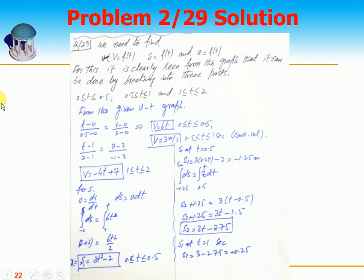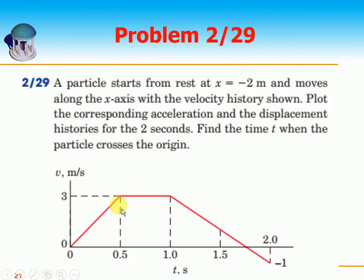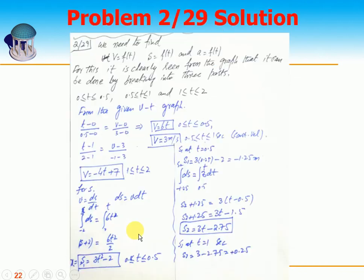We need to find velocity as a function of time, displacement as a function of time, and acceleration as a function of time. For the straight-line segments, we use the two-point form: (v minus v1)/(v2 minus v1) equals (t minus t1)/(t2 minus t1). For the first part, one point is (t=0, v=0) and the other is (t=0.5, v=3). This gives the velocity-time relationship for 0 to 0.5 seconds.